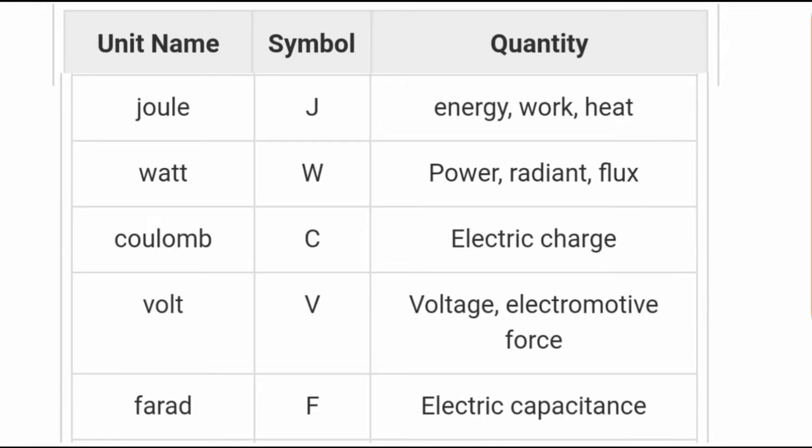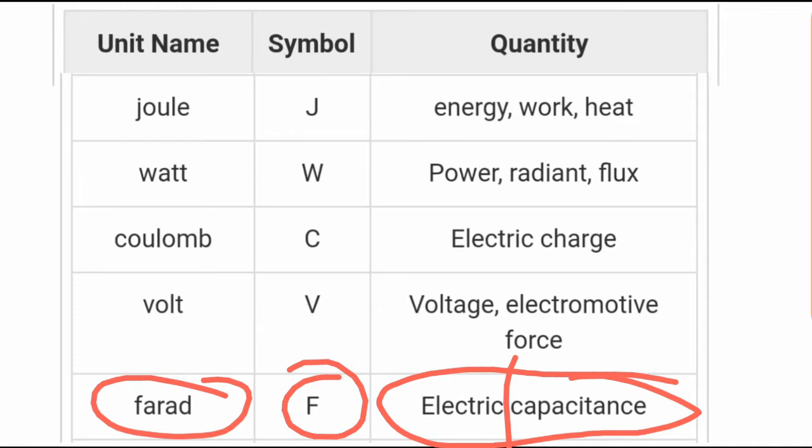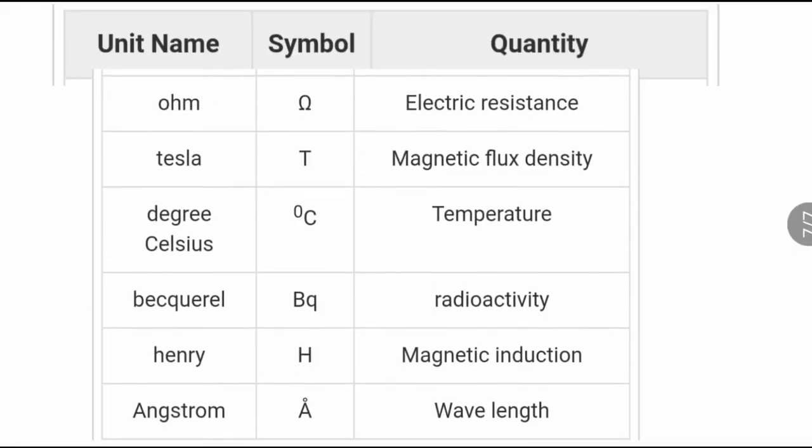Voltage or electromagnetic force is volt, V. Electric capacitance is farad, F. Electrical resistance is ohm, symbol omega.